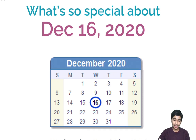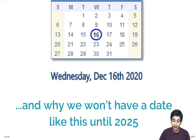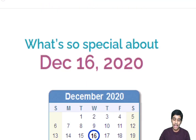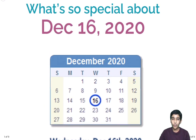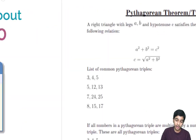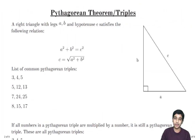What's so special about December 16, 2020? And why won't we have a date like this until 2025? In order to answer this question, we're going to need to know a little bit about the Pythagorean theorem and Pythagorean triples.